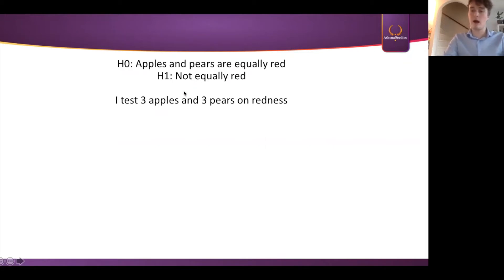So what I'm going to do, I'm going to test three apples and three pears on redness. If I wanted to be sure on the answer of the hypothesis, what I would have to do is test all the apples and pears in the world. The only problem with that is that it takes a lot of time, and I don't really feel like that. So what I'm going to do instead is I test three apples, three pears. And based on that I'm going to derive to a conclusion.